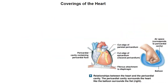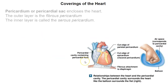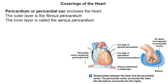Let's look at the coverings of the heart. We have the pericardium, or the pericardial sac — that's a sac that encloses the heart. There's an outer layer called the fibrous pericardium. We can see that well here — this is the fibrous pericardium, the very outside edge.